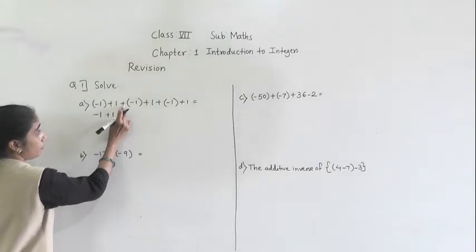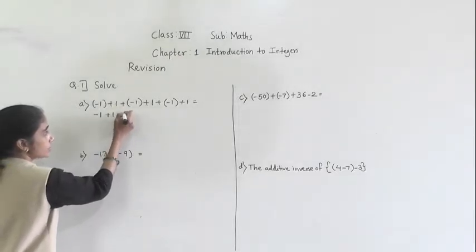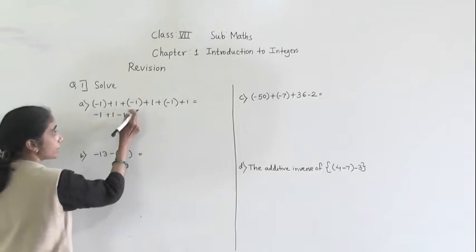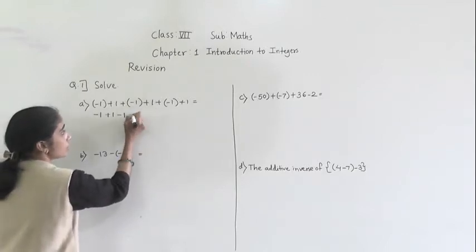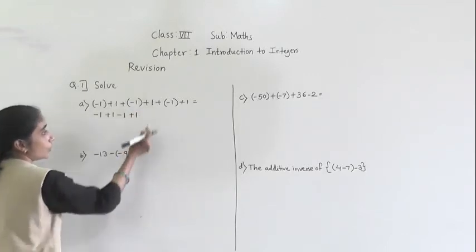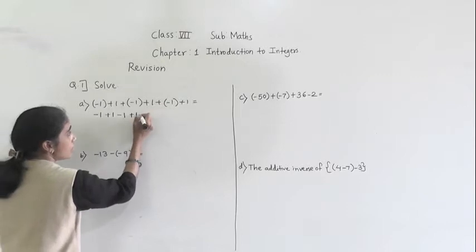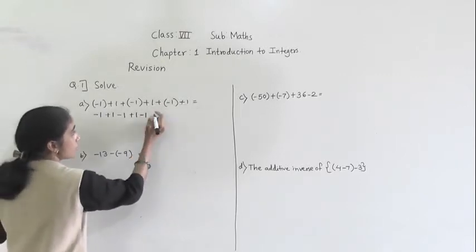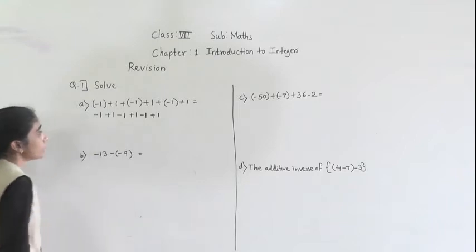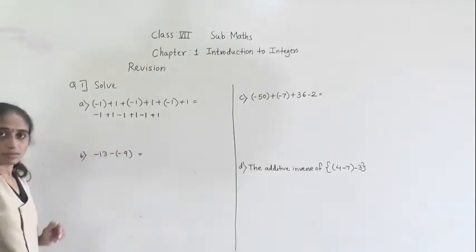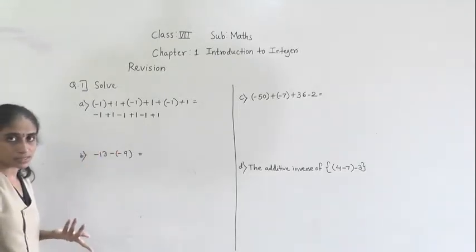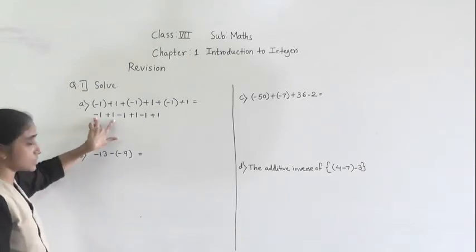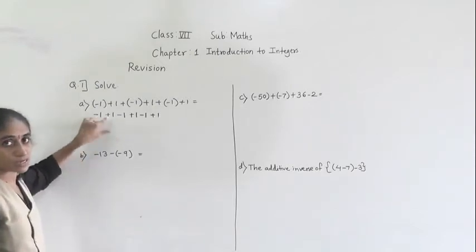Then see: plus minus minus. We are going to open the bracket. So plus minus minus - then this plus 1. And plus minus minus - so minus 1, then this plus 1. So minus plus minus, minus minus plus minus minus 1 plus 1, minus plus minus.